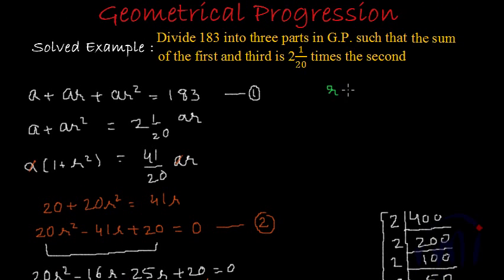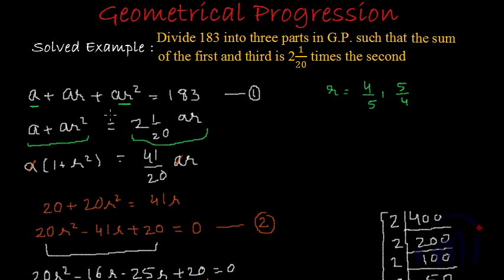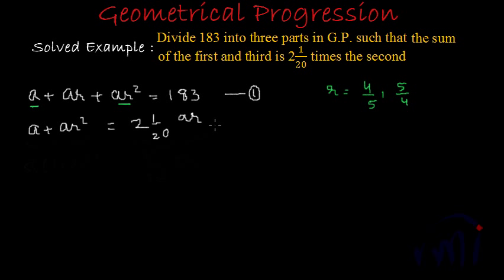So r is either 4/5 or 5/4. Now, we have the relation a + ar² = (41/20)ar. Substituting this into equation 1 — which says a + ar + ar² = 183 — we can replace a + ar² with (41/20)ar. The equation becomes (41/20)ar + ar = 183.